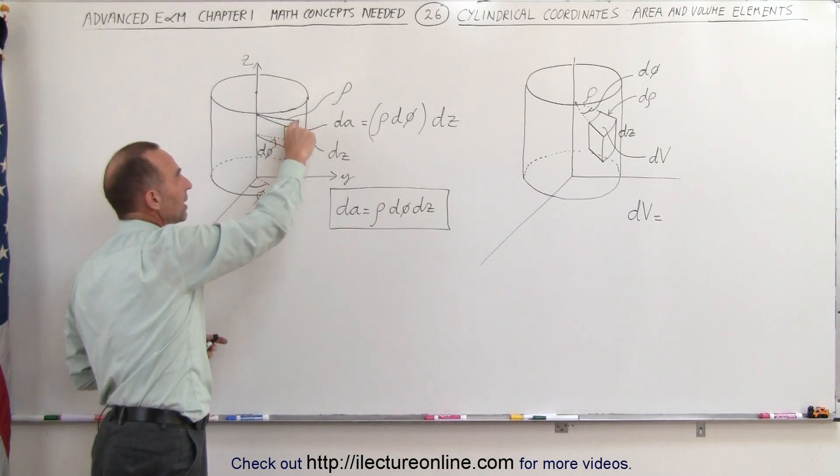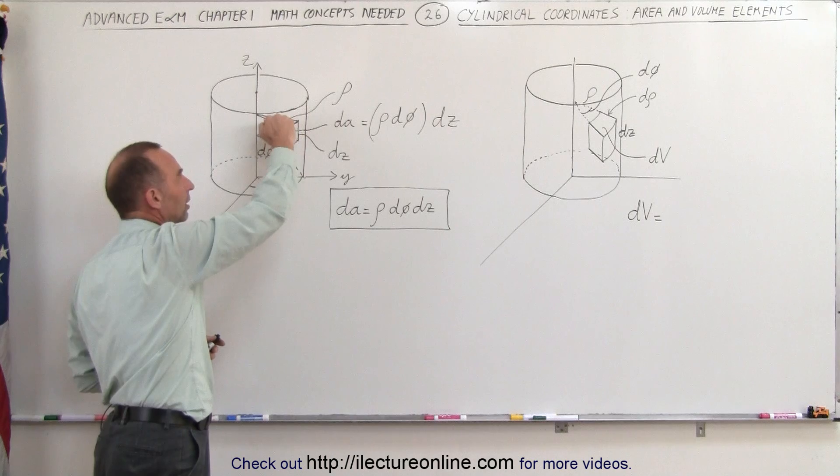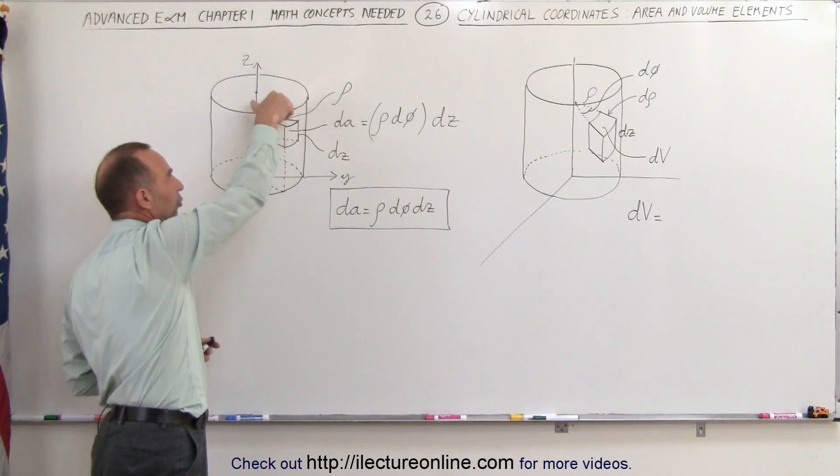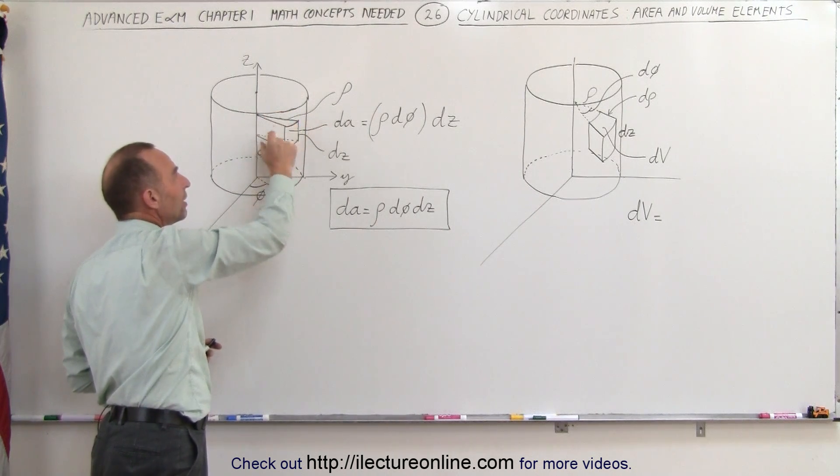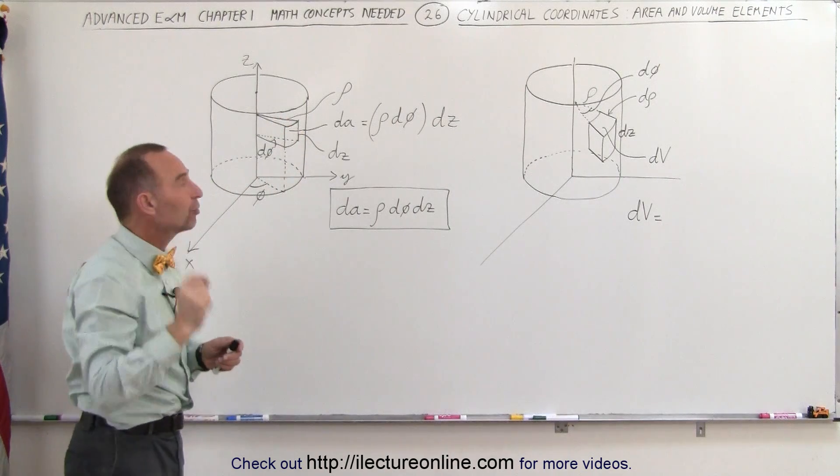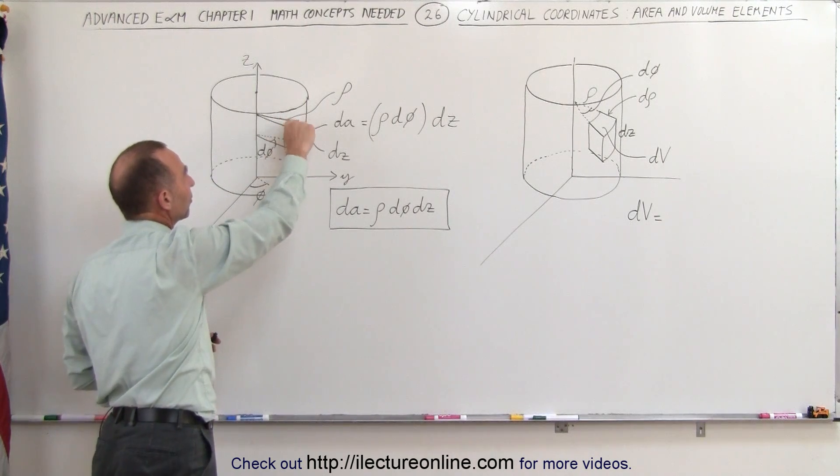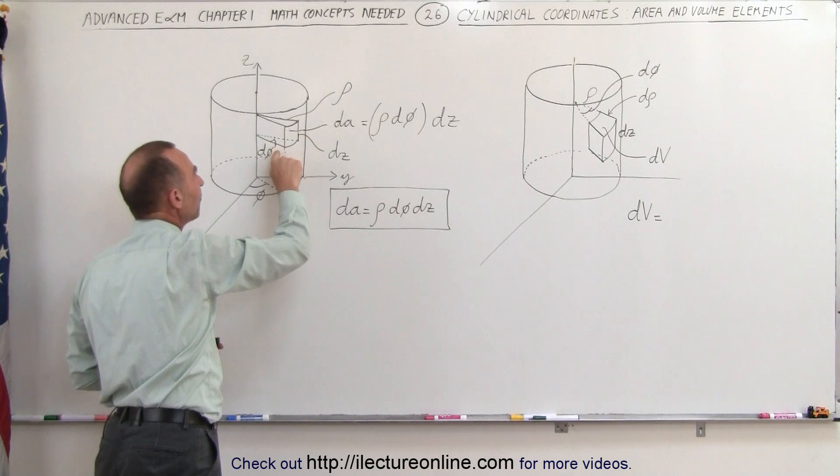If you want to know the distance here, that's kind of an arc length, we have to multiply the radius called rho times the angle called dPhi, it's a small, infinitesimally small angle. So this distance from there to there is rho times dPhi,